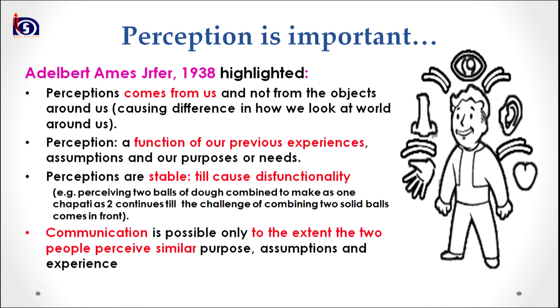Perception is very important as it is the basis for representation. The theorist Adelbert Ames Zerper in 1938 highlighted that perception comes from us and not from the objects around us. Therefore, it causes differences in how we look at the world. Perception is something within us, not outside us, and therefore it is subjective, not objective.